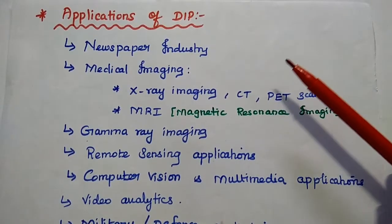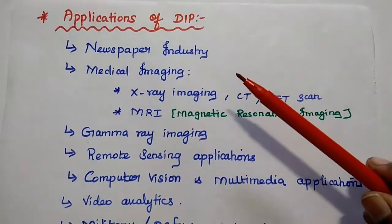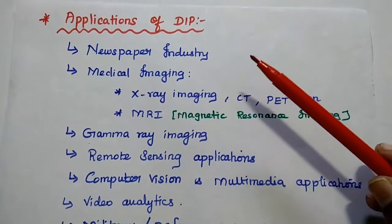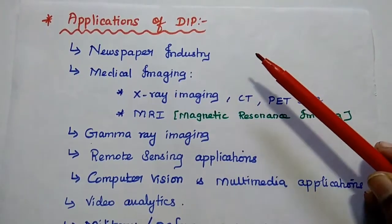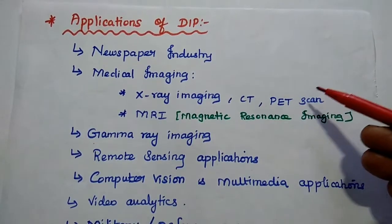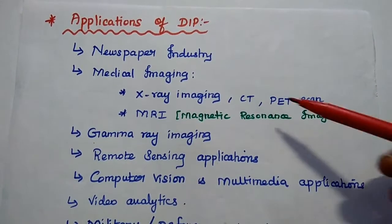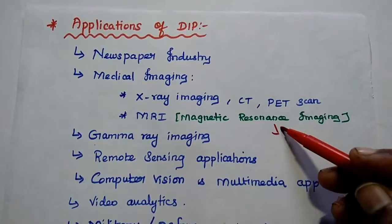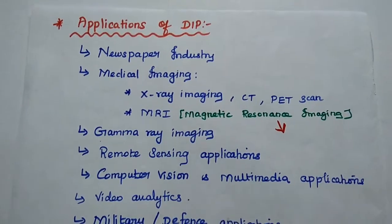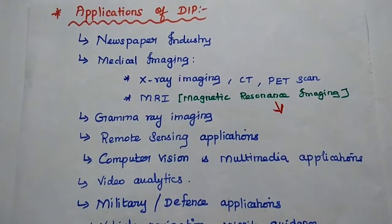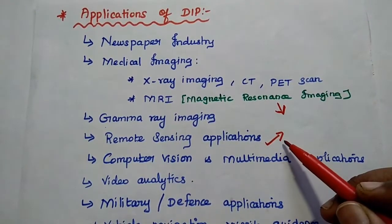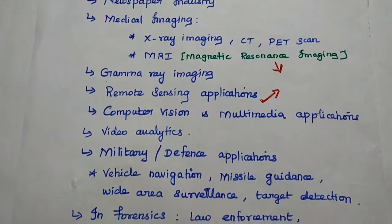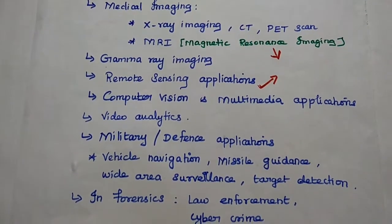Next, applications of digital image processing. The very first application of digital image is in the newspaper industry, starting in the 1920s. Medical imaging technologies widely use this concept — X-ray imaging, CT scan, PET scan, and MRI (magnetic resonance imaging) using radio imaging concepts. Likewise, gamma ray imaging, remote sensing applications, satellite applications, computer vision, multimedia applications, video analytics (surveillance) — everywhere we are using digital image processing methods.